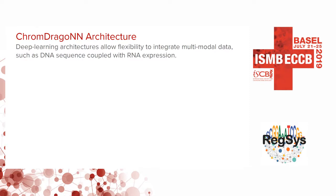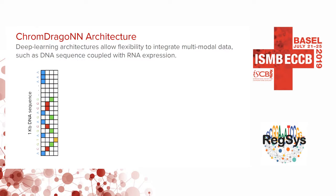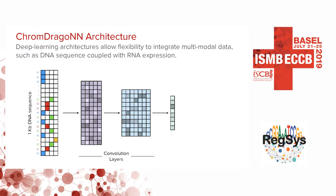Our architecture starts with the one-hot encoding of DNA sequence, passed through multiple convolution layers, then flattened to get a vector representation. Each convolution layer is analogous to a PWM filter scanned across the input sequence, with a non-linear transformation applied between consecutive layers. This step is common to sequence-only models as well.